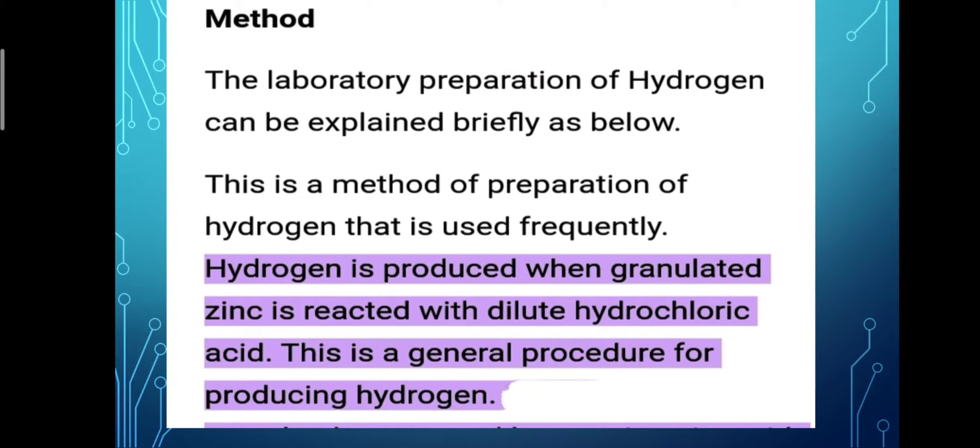Method. The laboratory preparation of hydrogen can be explained briefly as below. This is a method of preparation of hydrogen that is used frequently. Hydrogen is produced when granulated zinc is reacted with dilute hydrochloric acid. This is a general procedure for producing hydrogen.